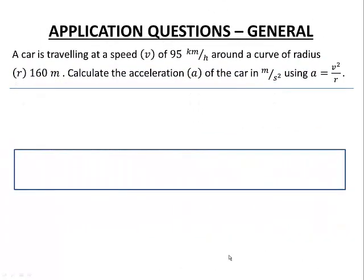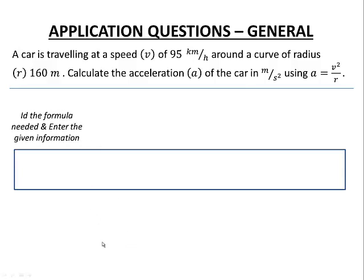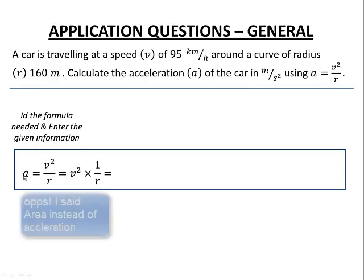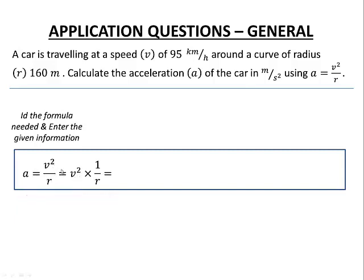Another example: a car is traveling at a velocity v of 95 kilometers per hour around a curve of radius r = 160 meters. We want the acceleration a of the car in meters per second squared. We are given the formula a = v² / r. We identify the formula and enter our given information, separating the division into a multiplication: v² times (1/r).